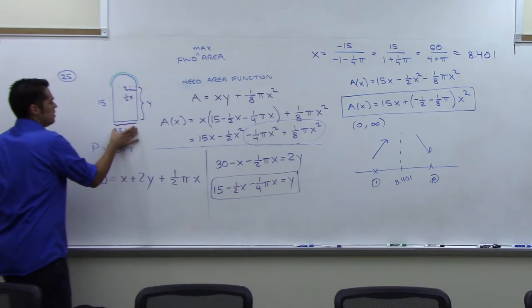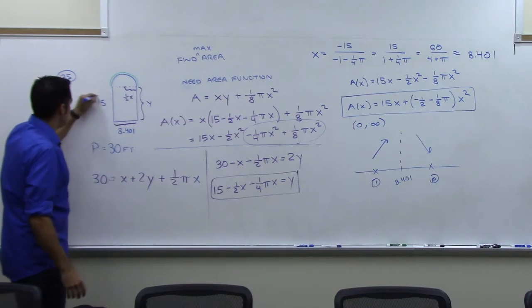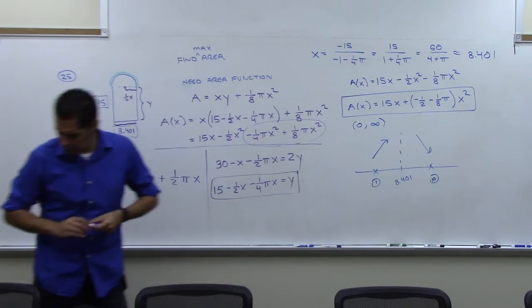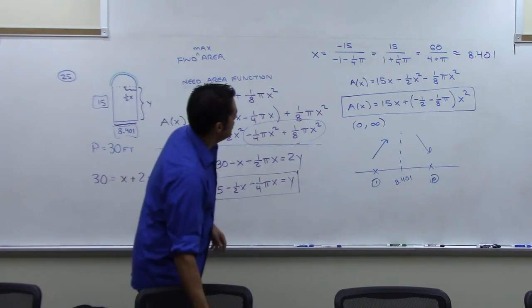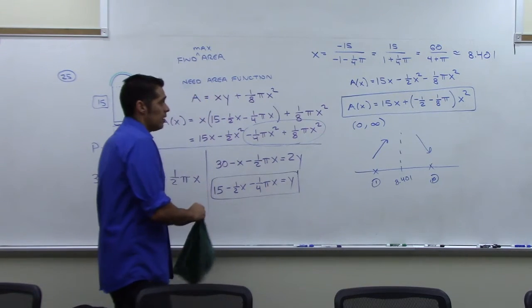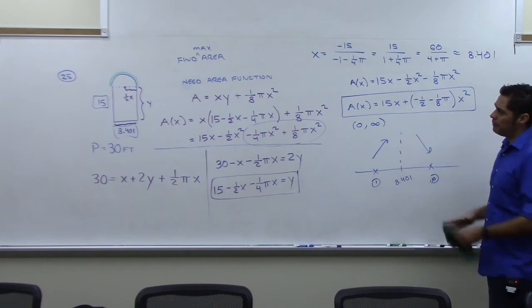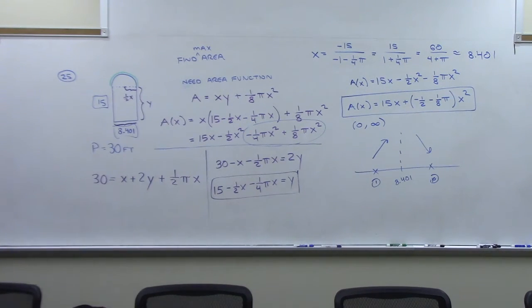And that's all you need. If you do this and this, then everything else is determined. This circle depends on how wide this is. So these are your dimensions. That's all they wanted? Find the dimensions. All right. If you wanted to know the actual area, you would, of course, have to plug 8.401 into this right here. All right. That's it. Hope that helps.